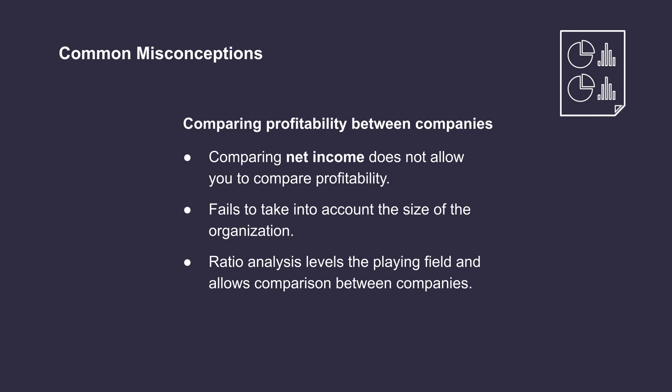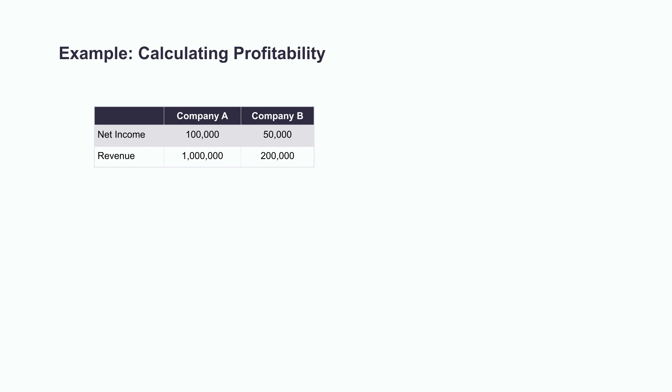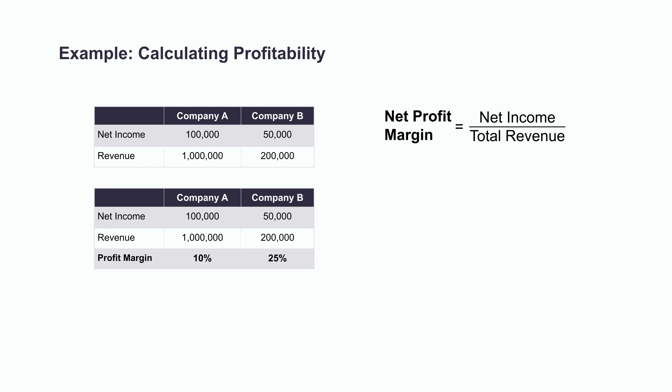Ratio analysis allows us to level the playing field and compare apples to apples. Let's calculate a profitability ratio for these companies so that we can compare them more effectively. We see that company A has $100,000 of profit, which is twice the amount of company B. Let's calculate the profit margin to get more insight into which company is actually more profitable. For company A, if we take the net income of $100,000 and divide it by the revenue of $1,000,000, that gives us a 10% profit margin. If we do the same for company B — $50,000 divided by $200,000 — we get a 25% profit margin.